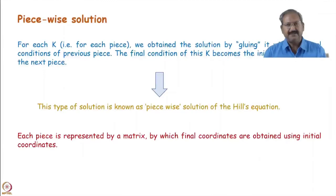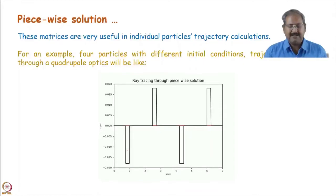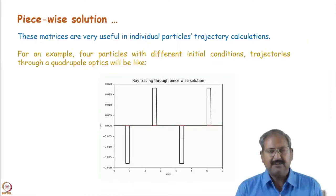Such a K function is defined by this type of function of S, and in each piece we solve the equation of motion and give the solution. This is known as the piecewise solution. We can plot various trajectories — trajectories associated with different initial conditions — very easily using this piecewise solution or matrices. In this example, the first magnetic element is a defocusing quadrupole, the second is a focusing quadrupole, the third is again a defocusing quadrupole, and the fourth is a focusing quadrupole.